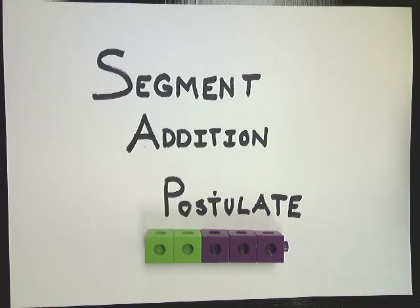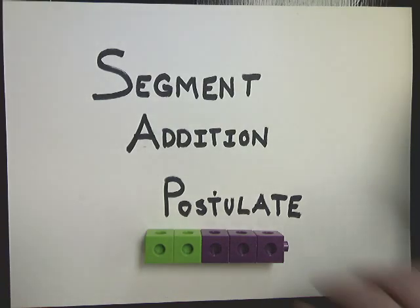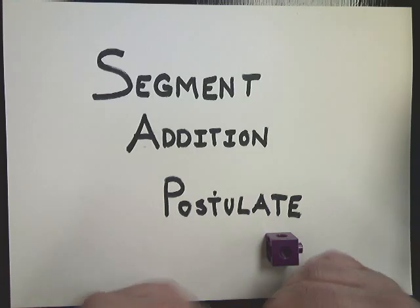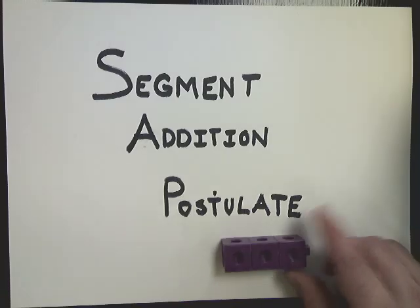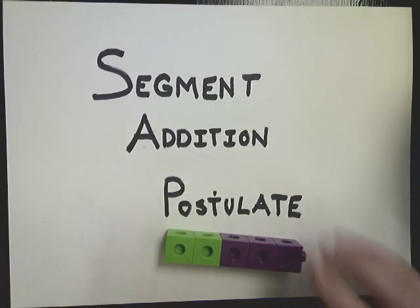You should be able to notice that there are two different colors there. If you don't, then adjust your screens accordingly. So I have one, two, three purple ones. So if I know that the entire segment is five blocks long, and I know that this segment is three, so I know the whole thing is five.